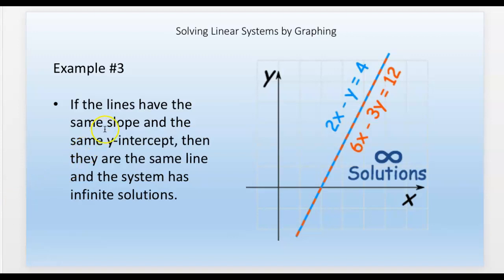If two lines have the same slope and the same y-intercept, then they're the same line — one on top of the other — and the system has infinite solutions. These are the same line: the bottom equation is just the top one multiplied by three. The blue line times three gives you the orange/red one.